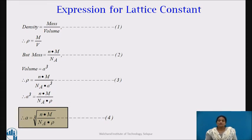So the equation reduces as density is equal to N multiplied by M divided by Na into A cubed. So by rearranging and taking the cube root, we will get the equation for lattice constant as given by the equation number 4 here.